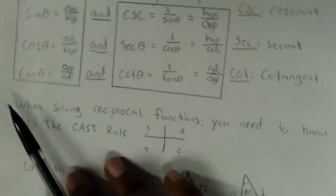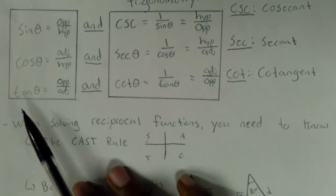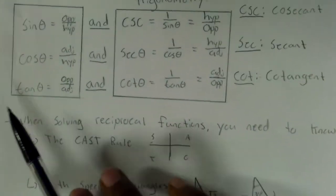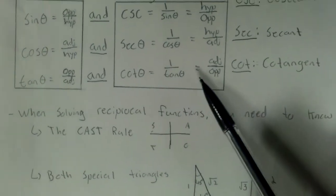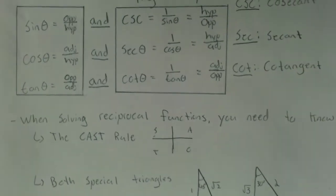And the last would be tangent of theta is equal to opposite over adjacent. And the reciprocal would be cotangent is equal to 1 over tan of theta and is also equal to adjacent over opposite.